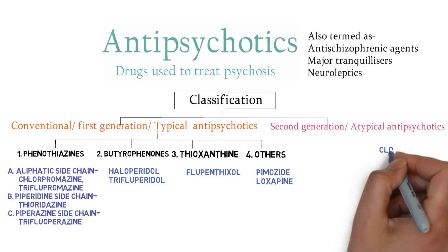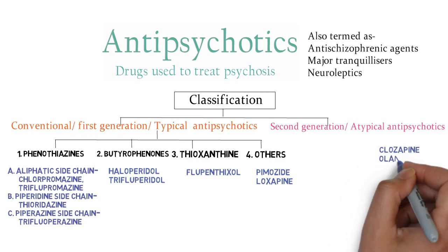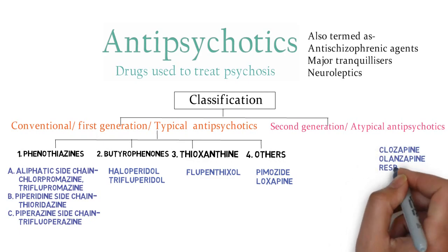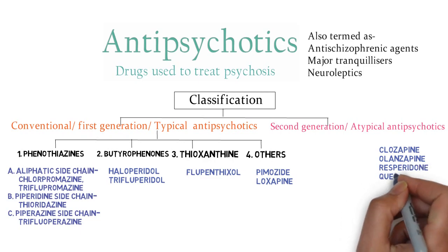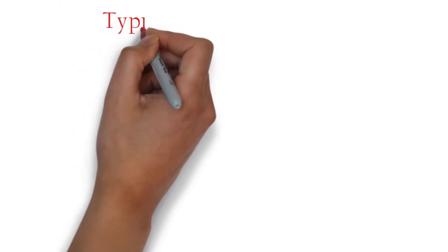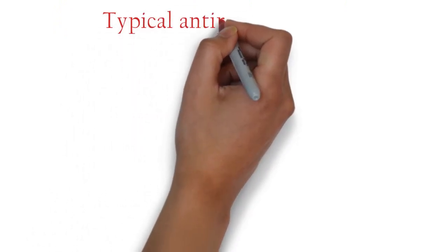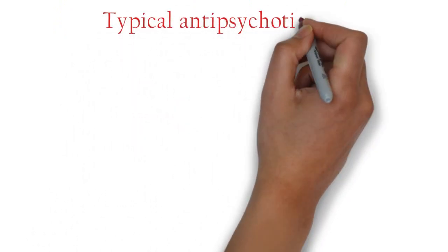The atypical antipsychotics include clozapine, olanzapine, risperidone, and quetiapine. We will now study the pharmacology of the typical antipsychotic agents, whose prototype is chlorpromazine.